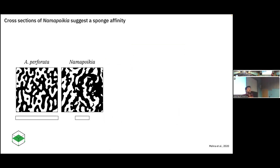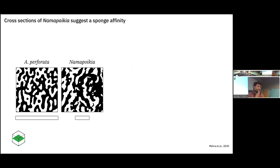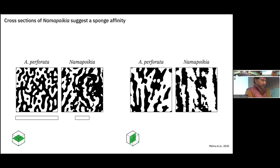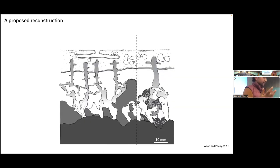Superficially, Namapoikia looks a lot like other sponges in the rock record. I'm showing you Aphrosalpinx, an inozoan sponge from the Ordovician — canals in black, sponge structure in white on the left, Namapoikia on the right. These are transverse cross sections. One thing to point out: both scale bars are one-half centimeter, so Namapoikia is far, far larger than any Aphrosalpinx. Interestingly, even looking at longitudinal cross sections through Namapoikia and Aphrosalpinx, we see things that look superficially similar. It's not a stretch to imagine this organism was in fact a sponge. So we want to evaluate it, and we have proposed reconstructions as a basis.